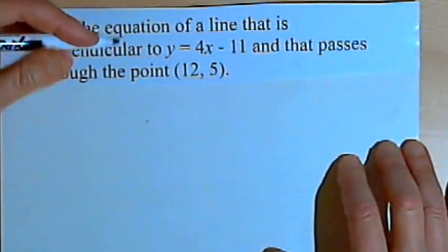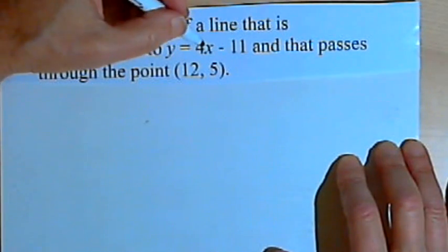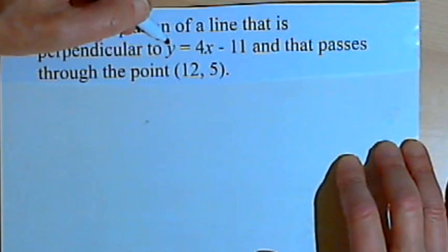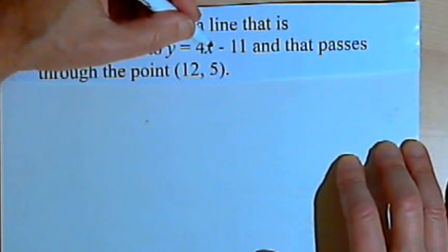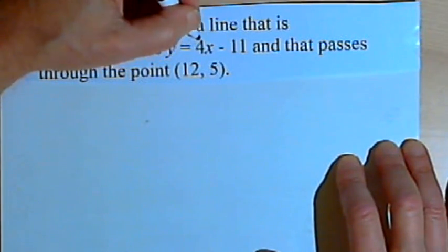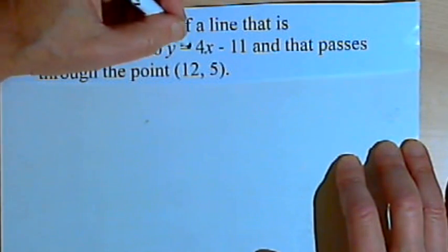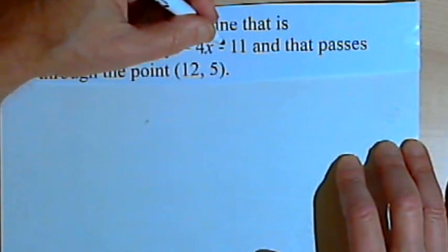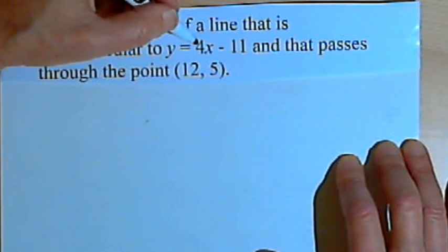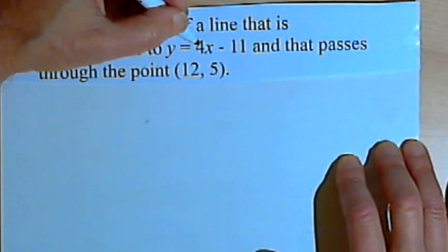Let's review equations in the form y equals mx plus b. We have the equation y equals 4x minus 11. The m tells us what the slope is. So in y equals 4x minus 11, that 4 is in the m position, which means the slope of the given line is 4.